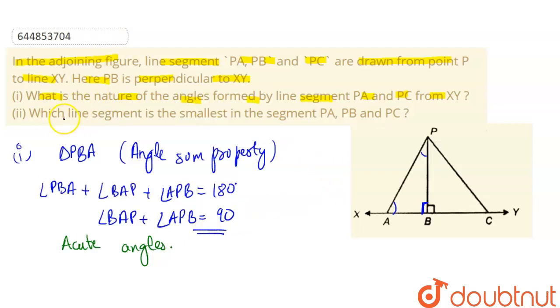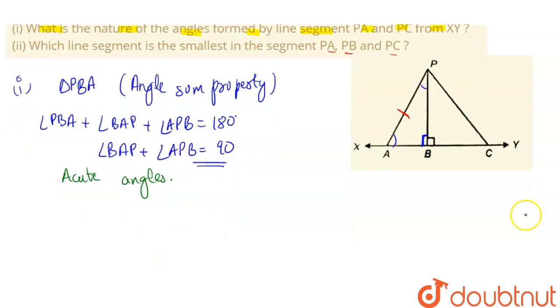Now second part is: which line segment is smallest in the segment PA, PB and PC? So in triangle PBA, we can see that this is a right angle triangle. So the side opposite to 90 degrees is the hypotenuse and this is the longest side. So PA will be greater than PB because PA is hypotenuse and hypotenuse is the longest side.